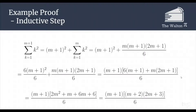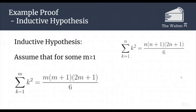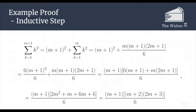That sum from k equals 1 to m of k squared is what we were able to assume was equal to m times m plus 1 times 2m plus 1 all over 6 by our inductive hypothesis, so we are able to replace the sum from k equals 1 to m of k squared with that fraction in our proof.